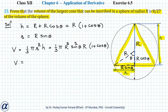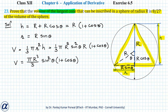So the height of the cone in terms of R and theta can be written as r + r·cosθ, which equals r(1 + cosθ), and the radius of the base of the cone equals r·sinθ. The volume of the cone will be (1/3)π·r²·sin²θ · r(1 + cosθ). We want to find the largest volume, that is, we want to maximize the volume of the cone with respect to theta.